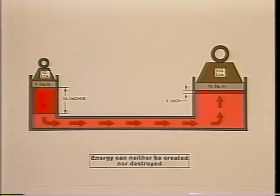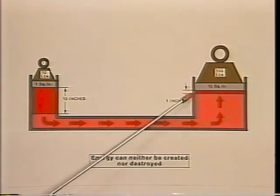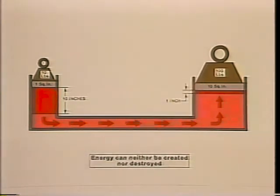Now, before you start thinking that we've gained something for nothing, let's push the small piston down a distance of 10 inches. This will displace 10 cubic inches of fluid, which in turn will force the large piston upward. The large piston, because of its 10 square inch area, will only raise one inch. Like its mechanical counterpart, the lever, what we gained in force was lost in distance. So you see, you can never get something for nothing, not even in a hydraulic system. But we can perform efficient work.